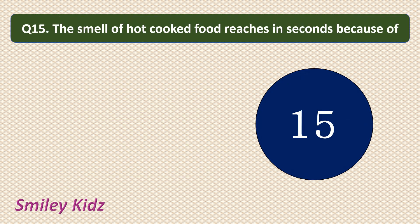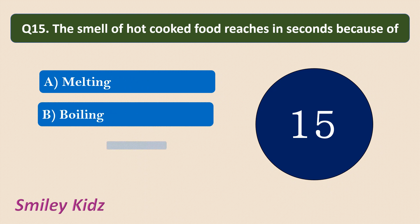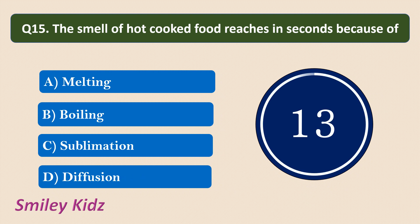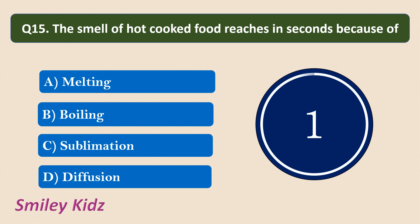Question number 15. The smell of hot cooked food reaches us in seconds because of: Melting, Boiling, Sublimation, or Diffusion? Your time starts now. Your time is up and the correct answer is Diffusion. Diffusion is very fast when the temperature is increased. Here the food is very hot, meaning the temperature is increased, so diffusion takes place. That is why the smell of hot cooked food reaches us in seconds because of diffusion.